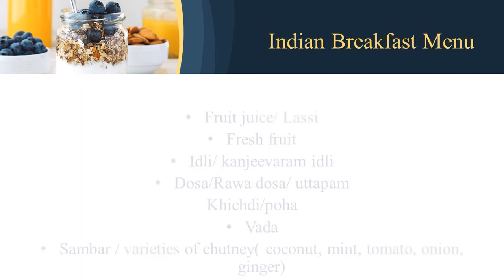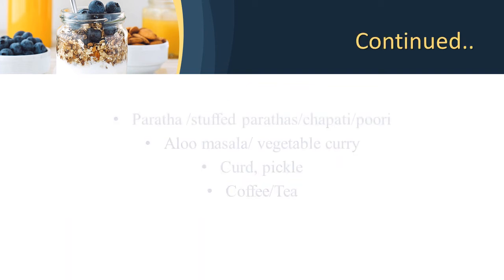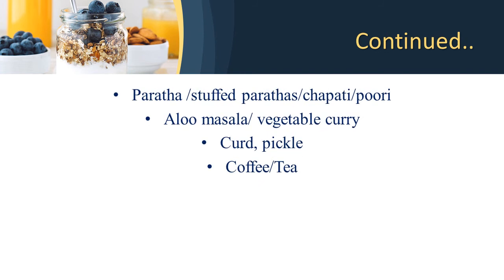Indian breakfast menu includes fruit juice or lassi, fresh fruit, idli, kanji varam idli, dosa, rava dosa, uttapam, khichdi or poha, and vada. Sambhar and varieties of chutney — coconut, mint, tomato, onion, and ginger — are also included. We can also serve paratha, stuffed paratha, chapati, or puri, along with aloo masala or vegetable curry, curd, pickle, and coffee or tea as per the guest's requirement.